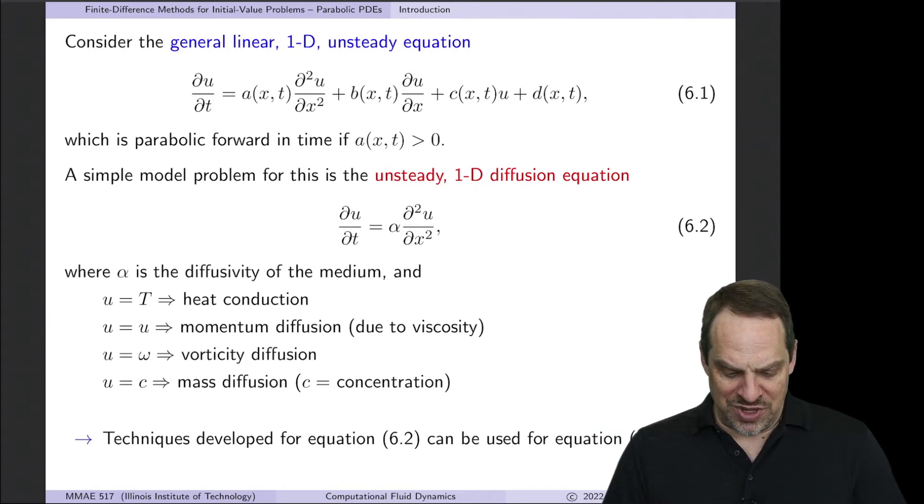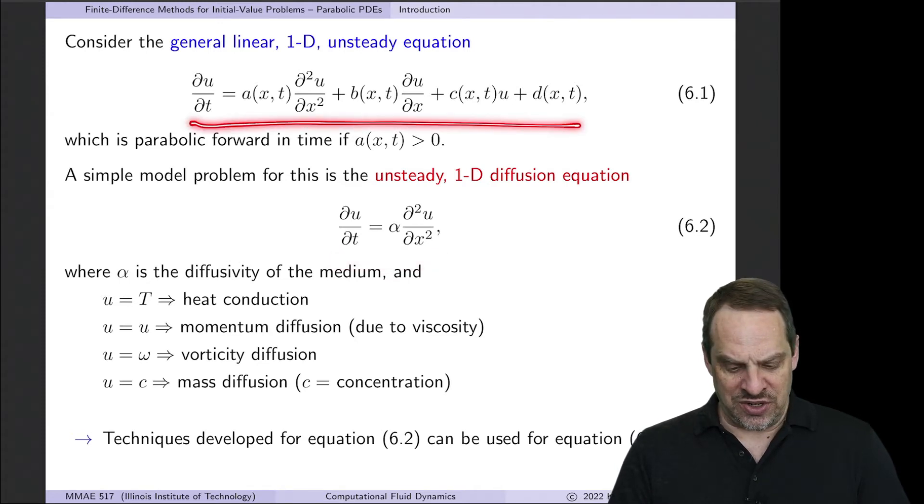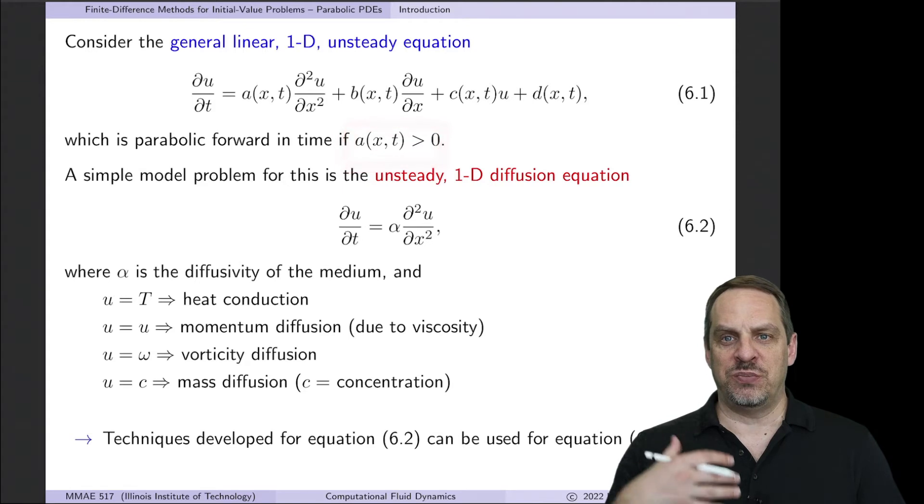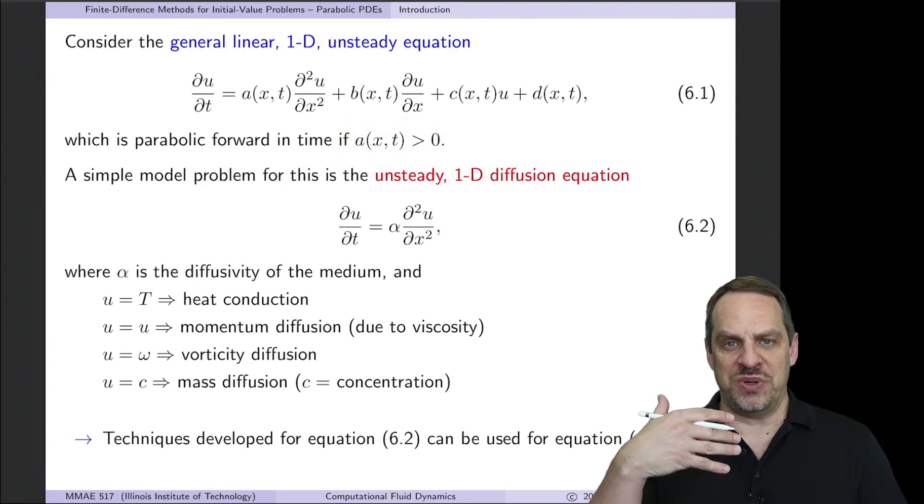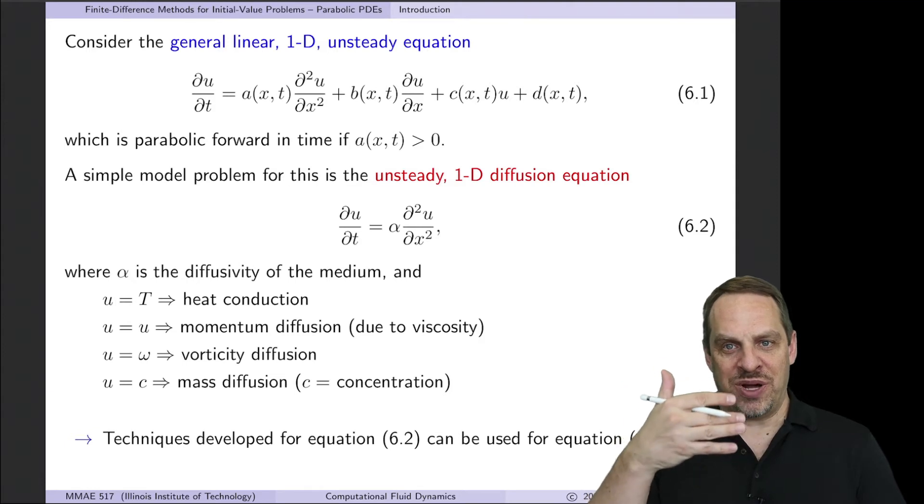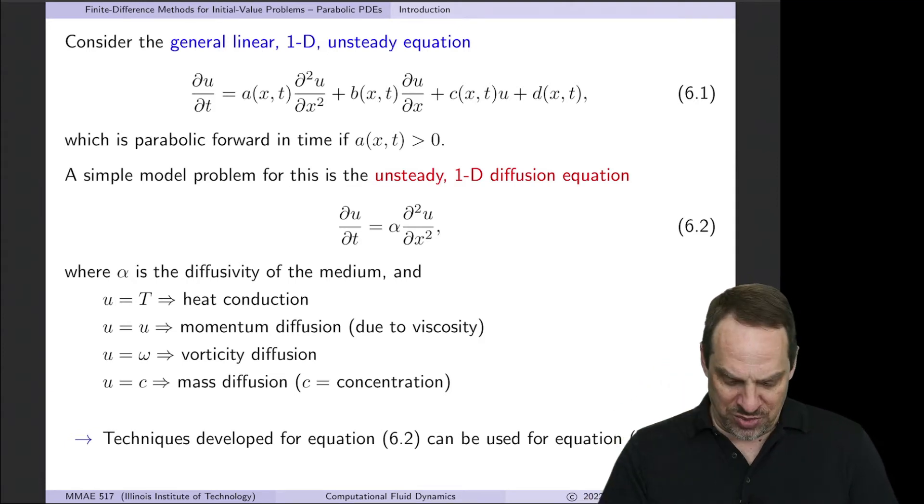The key here is that any methods that we develop for this equation can be extended naturally to this equation. The one thing I'll note, however, is that for this general form, the a coefficient has to be positive, positive in order for it to be parabolic forward in time. If a was negative, then it would actually be parabolic back in time. So normally, a will be positive, parabolic forward in time.